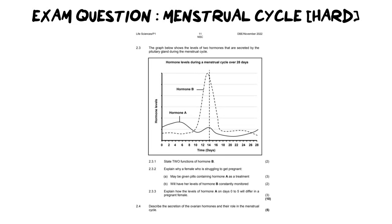2.3 says, the graph below shows the levels of two hormones that are secreted by the pituitary gland during the menstrual cycle. So we've got to think what two hormones come from the pituitary gland only that are involved in the menstrual cycle. And let's just make a little note alongside here. That's going to be LH and FSH, luteinizing hormone and follicle stimulating hormone.